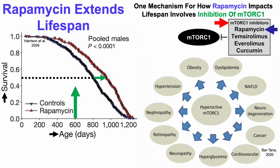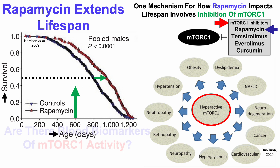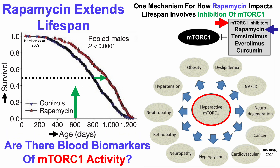Inhibiting mTORC1 during aging is potentially important because when mTORC1 is hyperactive, we can see that it negatively impacts the health or function of many organ systems, including hypertension or high blood pressure, obesity, dyslipidemia or high blood lipids, non-alcoholic fatty liver disease (NAFLD), neurodegeneration, cancer, and so on. So that raises the question: are there blood biomarkers of mTORC1 activity?